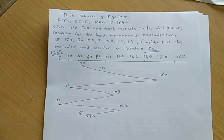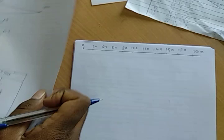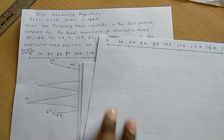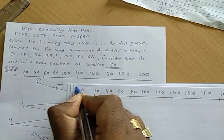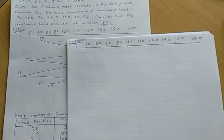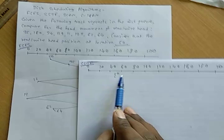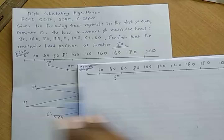Let us evaluate the second algorithm, SSTF, for the same data. SSTF means Shortest Seek Time First. The given current head position is 50. We find the nearest track position with respect to 50. From 50, we check which is the nearest read/write head position on the left or right side.